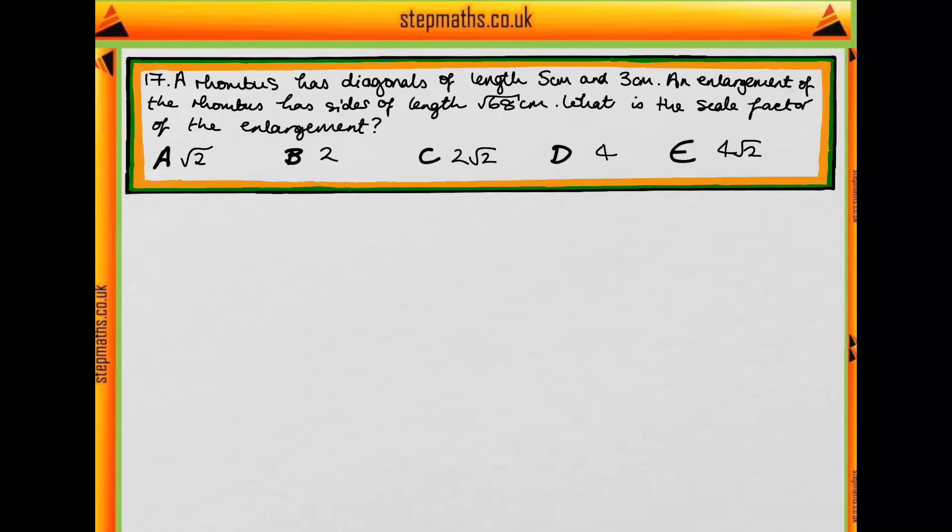In this question we have a rhombus which has diagonals of length 5cm and 3cm and it's enlarged. The enlargement has sides of length √68cm. We want to know the scale factor of the enlargement.